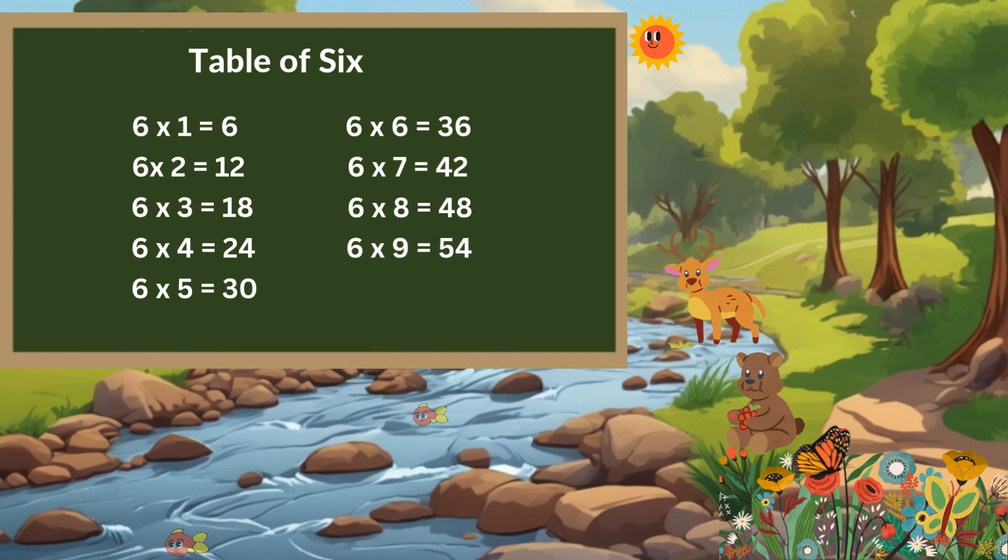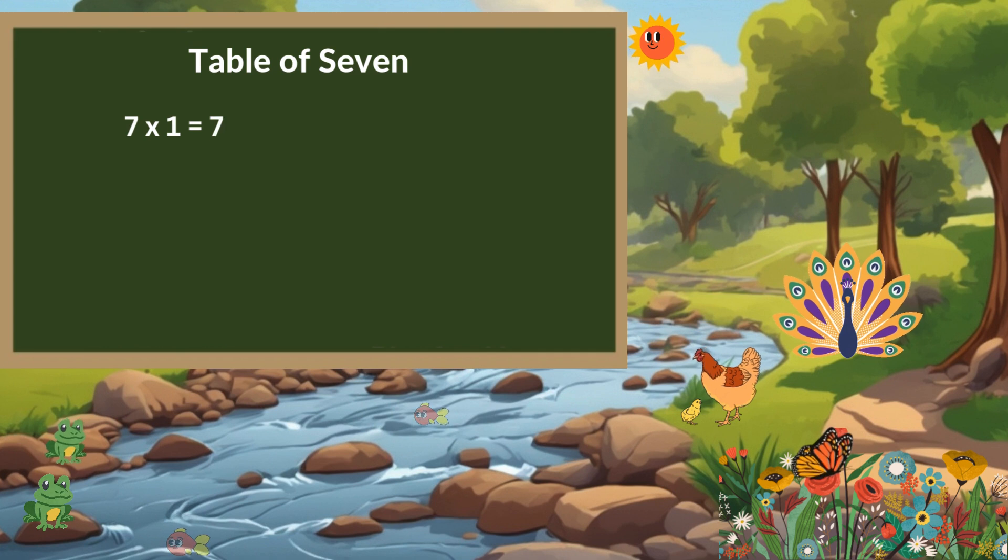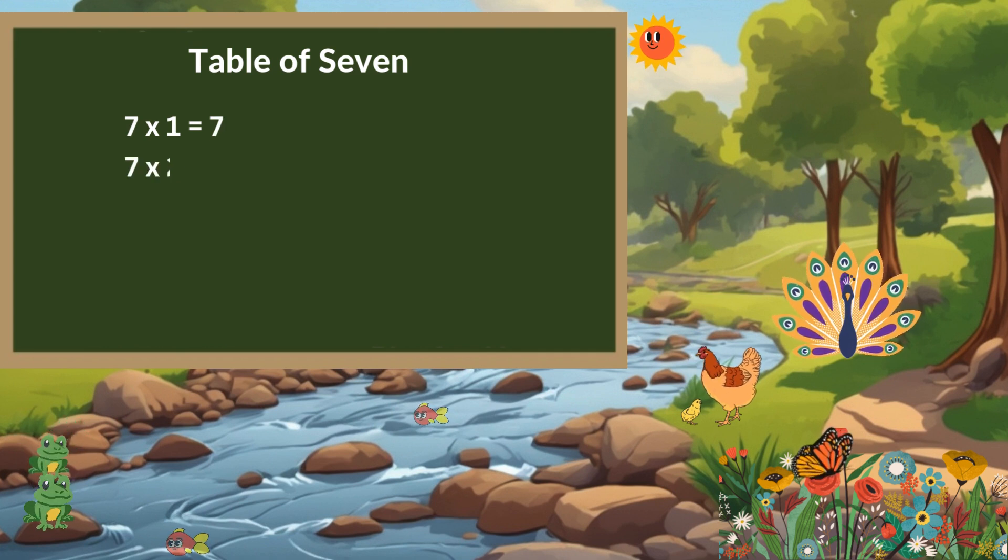6 times 9 is 54. 6 times 10 is 60. Table of 7. 7 times 1 is 7. 7 times 2 is 14.